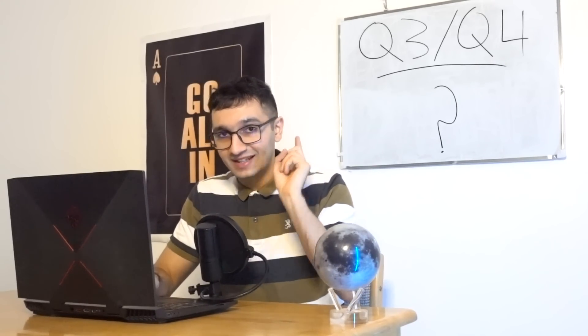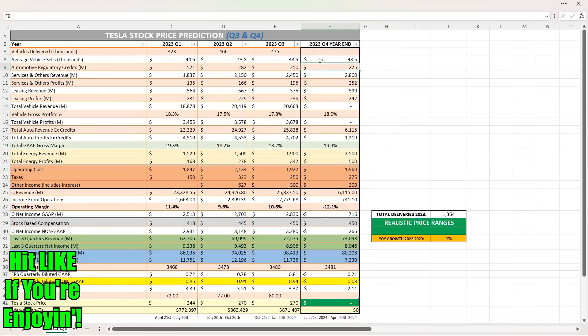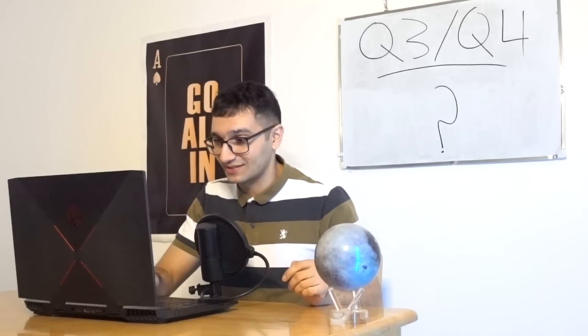Now let's move on to Q4, because I think Q4 is going to be a monstrous year in terms of deliveries. The average selling price I kept flat from Q4 to Q3, same thing, no difference. Most likely it's going to go lower, but I'm going to keep it flat because I am optimistic. We have the credits here, $225 million. Services going up as well, leasing again slightly going up. Vehicle gross profits 18%, because again with COGS that's going to continue to go lower. Energy revenue here of $2.5 billion, which is absolutely insane, with a 20% profit margin. About half a billion dollars in profits—wouldn't that be an awesome day to see in Q4?